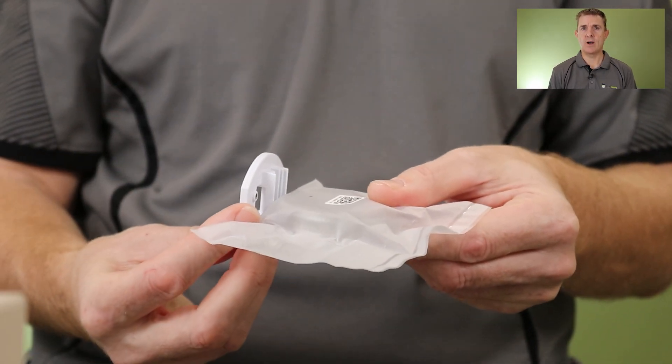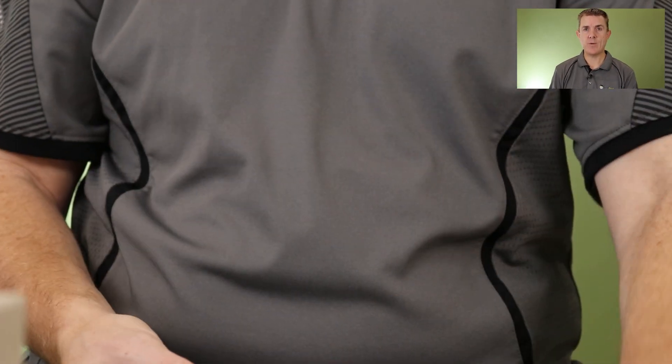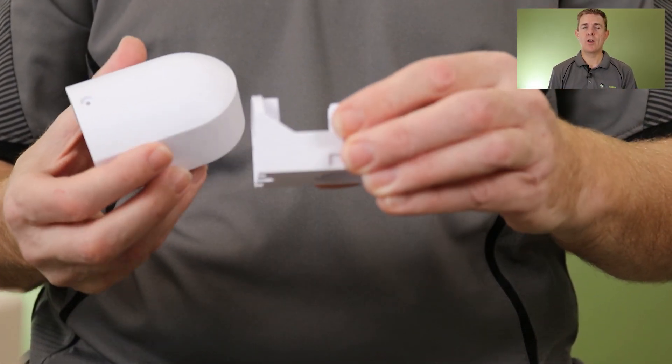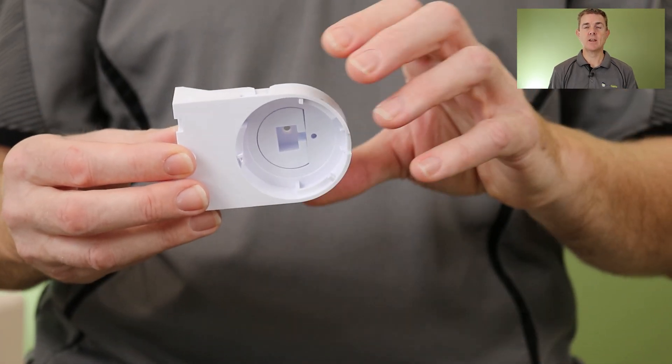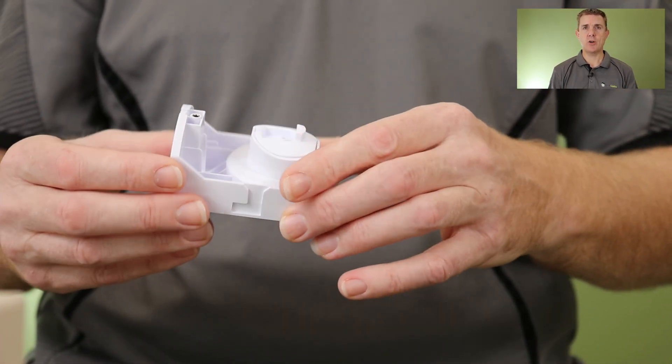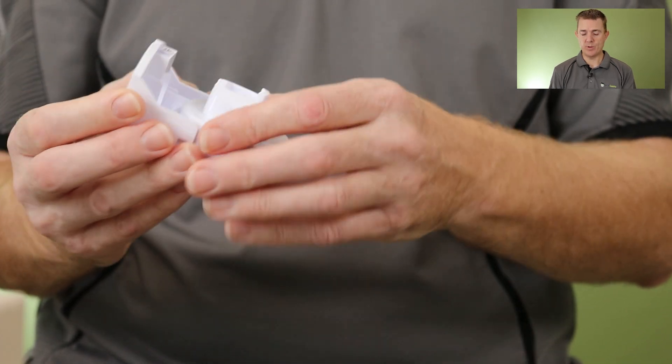Then you get the top fixings for the unit because this does hang vertically. I'll show you how all of this fixes together in a minute. This is where the cable would come in—it can come in through the back, then through this bung in the top.